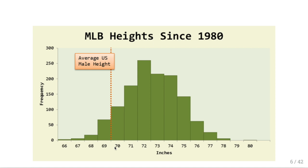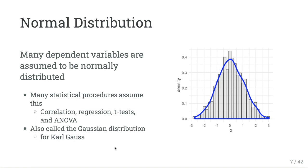One of the things we're going to rely on is this idea of a normal curve. But our sample doesn't always have to fit this description every time — even though we see it a lot in practice, we're not going to always rely on it. Many dependent variables are assumed to be normally distributed, so when we're talking about running correlations, regression, t-tests, and ANOVA, it's roughly assuming the dependent variable to be normally distributed. It doesn't have to be exact.